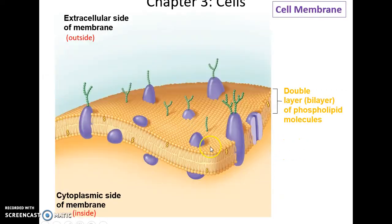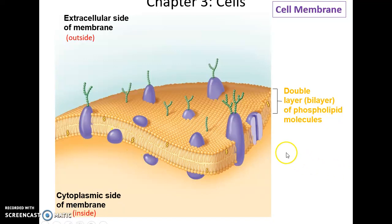The cell membrane is made up primarily of a double layer of phospholipid molecules — two layers of phospholipids with millions, maybe billions of phospholipids in the cell membrane, separating the extracellular side from the cytoplasmic side.